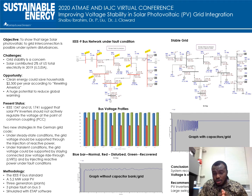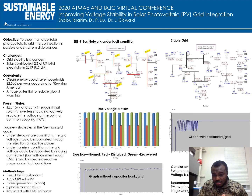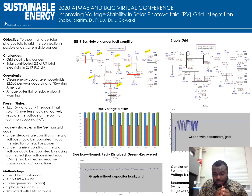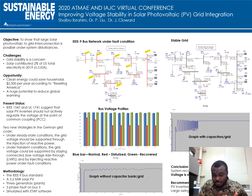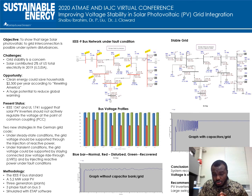The voltage is like the pressure that allows current or electrons to flow through the grid. The current is what actually allows your devices to work. Therefore, you need a very good pressure to push these electrons into all devices. Maintaining this voltage — this pressure — is very important in grid power quality and in providing reliable power to customers.